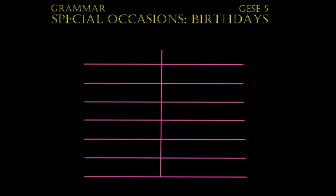Welcome back to another video for the GESE5. Today we are going to look at some grammar that has to do with special occasions. Specifically, verbs that you can use when you're talking about birthdays.